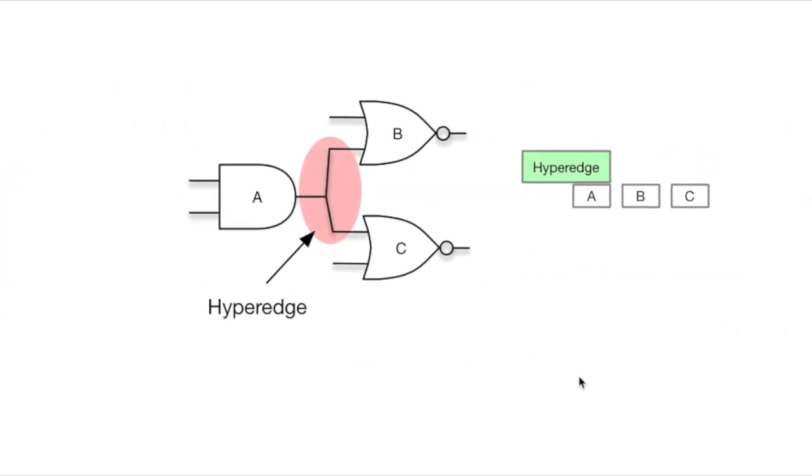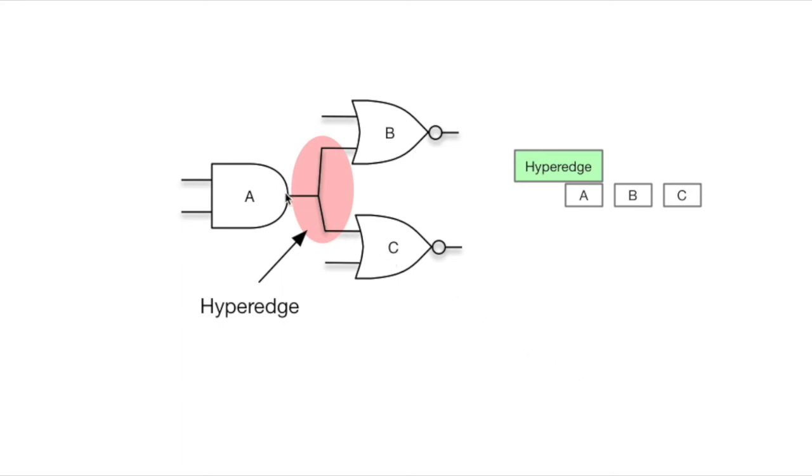So we'll pop over here, and we have hyperedge connecting vertex A, B, and C, these three components. Hyperedge has A, B, and C in some sort of linked list here, and so this makes it extensible and easily scales up to very large graphs.